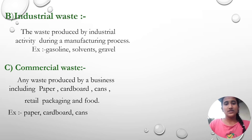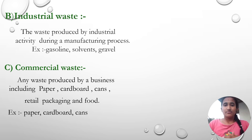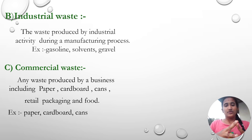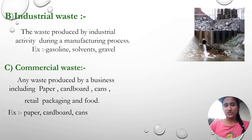The next one is industrial waste. Industrial waste is the waste produced by industrial activity during the manufacturing process. In factories or industries, materials are generated during manufacturing — we call that industrial waste. Examples are gasoline, solvents, and gravel. Here you can see a picture of industrial waste.